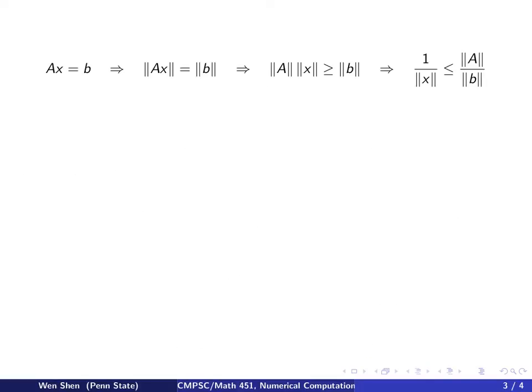So we use the original equation AX equals to B, and we take norm on both sides, and then we use the relation again. Matrix times vector norm is less than matrix norm times vector norm, so we have a greater than or equal sign. And then we can move the X norm to the right and the B norm to the left, and write it in the following form. So 1 over X norm is less than A norm over B norm.